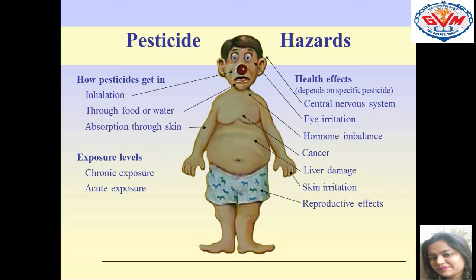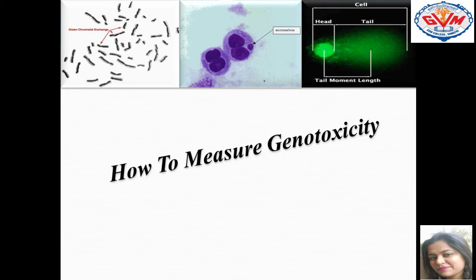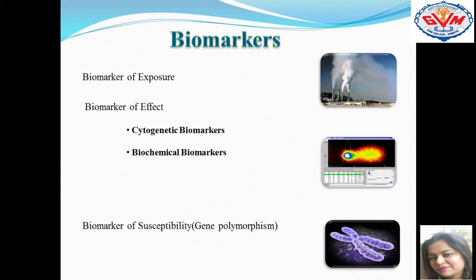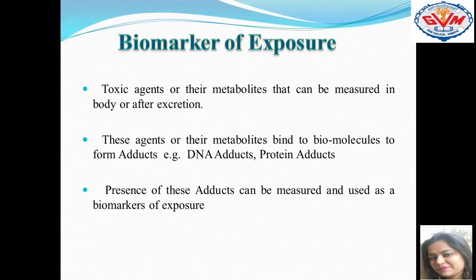How can we measure genotoxicity — how can we know how much damage these chemicals have created in our body? For this, we have three biomarkers. The first is biomarker of exposure. The second is biomarker of effect, which includes cytogenetic biomarkers and biochemical biomarkers. The third is biomarker of susceptibility. Among the biomarkers of exposure, we confirm whether our body is taking in the minimum amount of pesticides that can cause harm. The toxic agents get converted into metabolites called adducts, which can be measured through the biomarker of exposure.